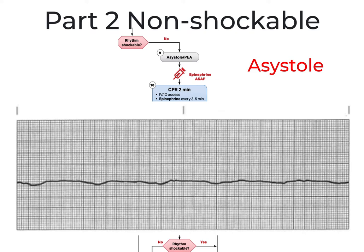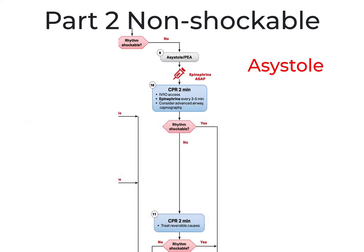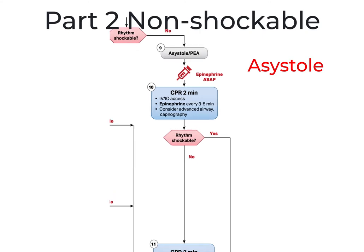Asystole and PEA, which I will discuss shortly, are managed under the same branch of this algorithm because our treatment options are identical. However, it's important to keep asystole in perspective. Asystole represents a complete lack of electrical activity in the ventricles and should be primarily viewed as a confirmation of death rather than a rhythm to be resuscitated. If we determine that resuscitation should be attempted, our treatment options for asystole are very simple.